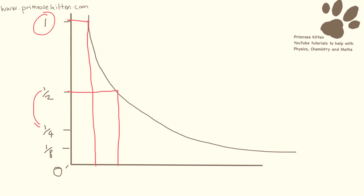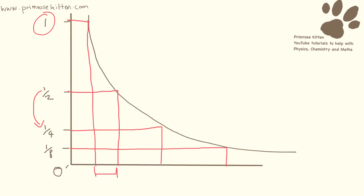Half it again, draw a line and go straight down. Half it again, draw a line and go straight down. Then you need to measure the distance from here to here, the distance from here to here, and the distance from here to here. All of these should be the same, and this is going to be your half-life.